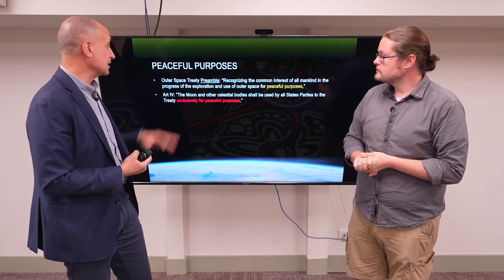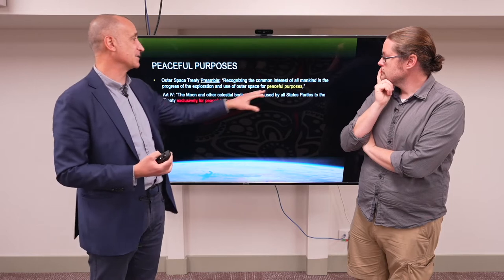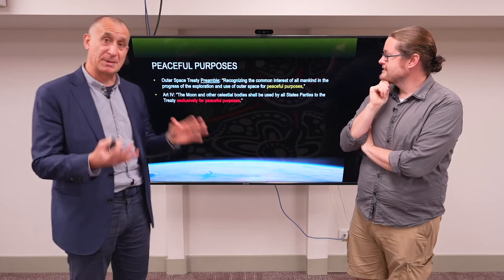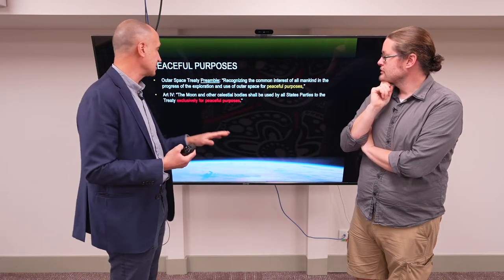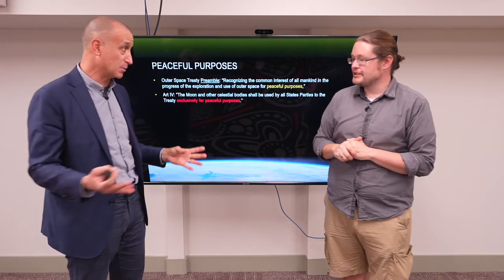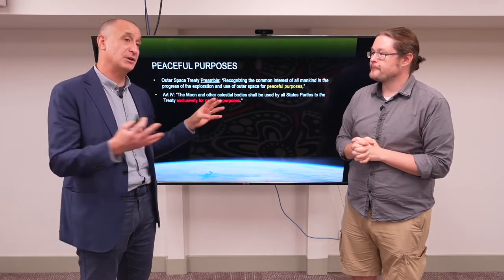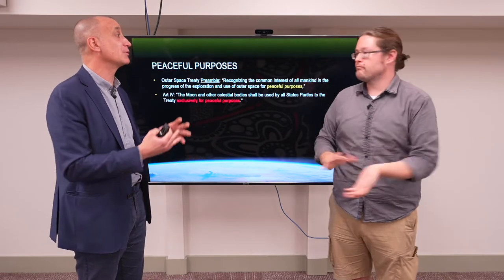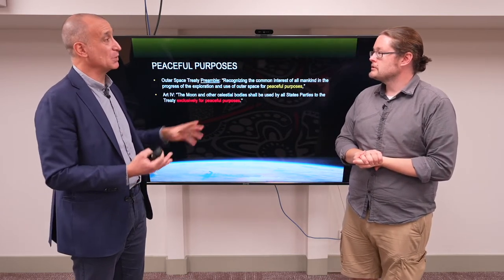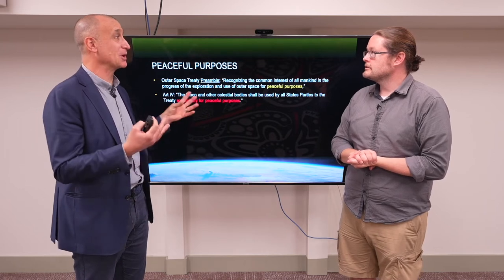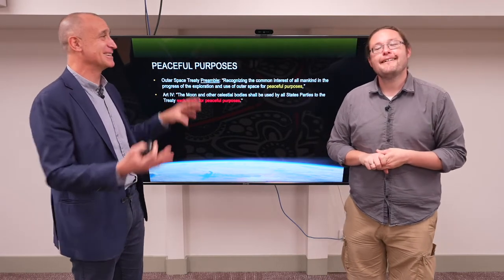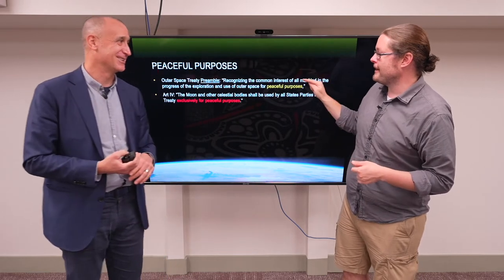The Outer Space Treaty in its preamble refers to the use of outer space for peaceful purposes. Article 4 goes on to talk about the use of the moon and other celestial bodies exclusively for peaceful purposes. It's important that the first reference is very general — it includes not just the moon and celestial bodies but also satellites or anything else. However, the preamble is not a substantive part of the treaty, so it's not legally binding — it's just an explanatory note at the beginning.